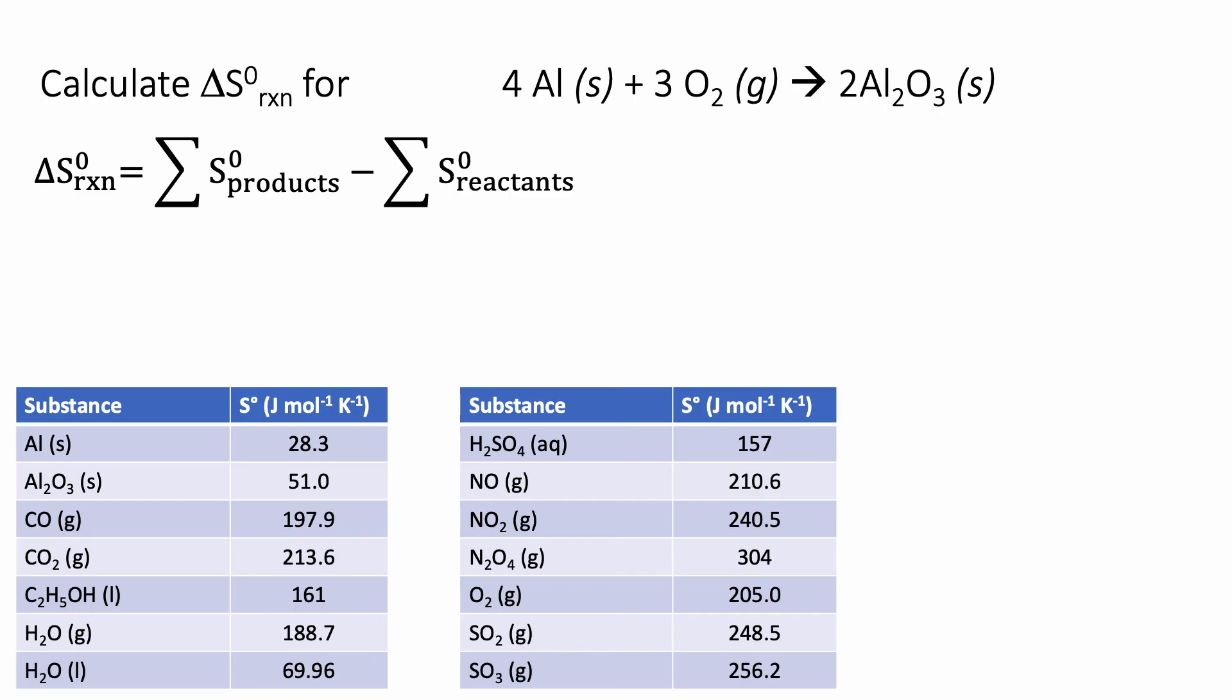Likewise, for our reactants, we don't just have two reactants, we actually have seven reactant molecules. And those all need to be accounted for. And so when we make this equation specific to the reaction, we need to multiply each of those entropy amounts by the coefficients in the balanced reaction.